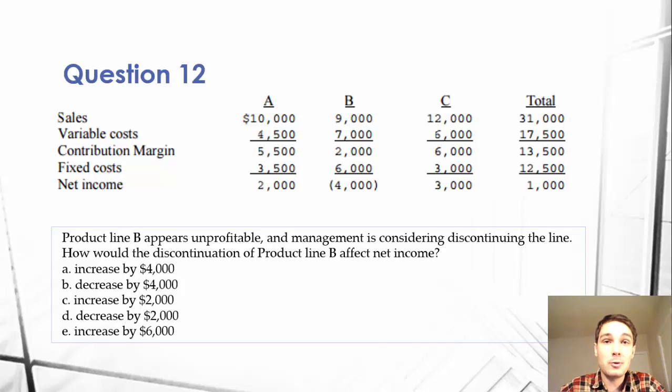Hi everyone, it's Devin Coombs, and today we will be covering question 12 in our managerial accounting lecture series. This question regards discontinuing operations, how to choose if an operation or product is profitable or not profitable, even if they have positive or negative net income.